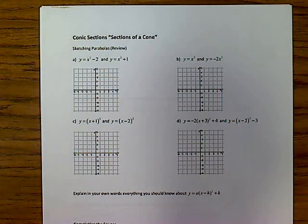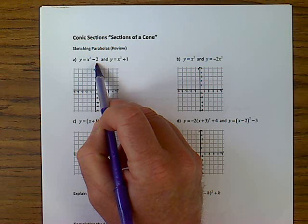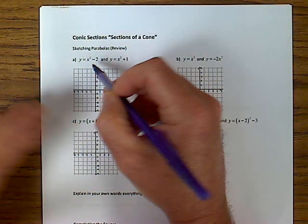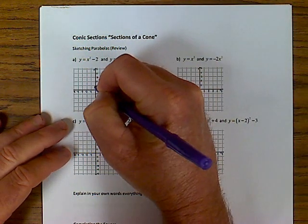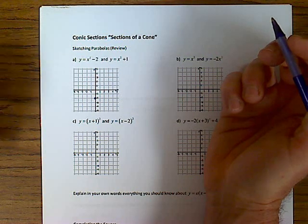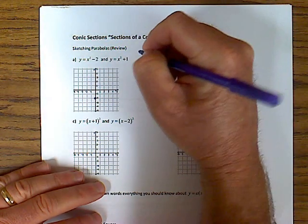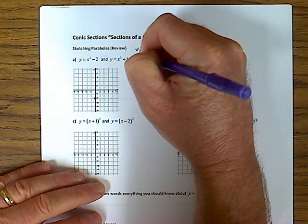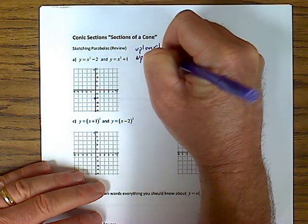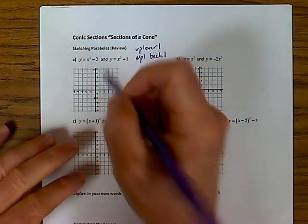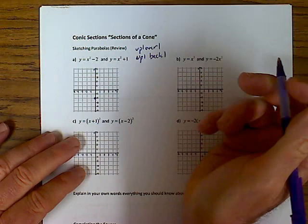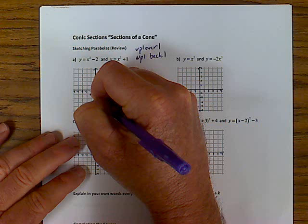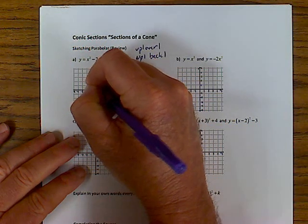First thing we want to do is sketch these parabolas: y equals x squared minus 2, and y equals x squared plus 1. Remembering from first semester, minus 2 moves us down 2, and then you need to remember your rule for graphing parabolas: up 1, over 1, up 1, back 1. So we'll move it down 2 because the minus 2 moves the parabola down 2, then go up 1, over 1, up 1, back 1, and we have graphed that parabola.